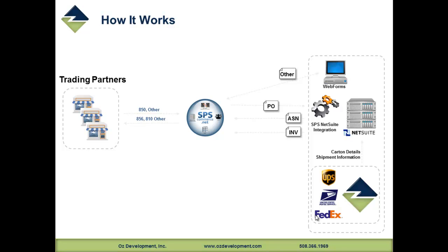Now let's talk about how it works in practice. On the left, you have over 1,800 trading partners connected into SPS Commerce's network. As they submit a purchase order, that flows electronically into NetSuite. As that flows into fulfillment and gets picked, packed, and shipped in the warehouse, it provides pack validation to confirm that the items in the order are actually the items that were picked and are being packed, generates the shipping information, and feeds all that information back into NetSuite, which automatically makes it available to generate the ASN. That ASN is then sent back through the SPS Commerce network.